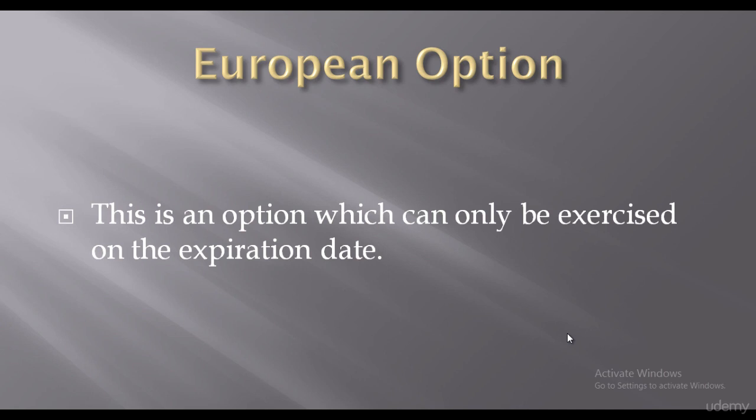A European option is an option which can only be exercised on the expiration date. In an American option, if the price goes up you can suddenly exercise that option, buy the share, and make a profit — you sell at a higher rate. Whereas with a European option, if the price goes up you cannot sell it; you need to wait till the expiration date. So in a European option contract, you cannot exercise it before the expiration date.